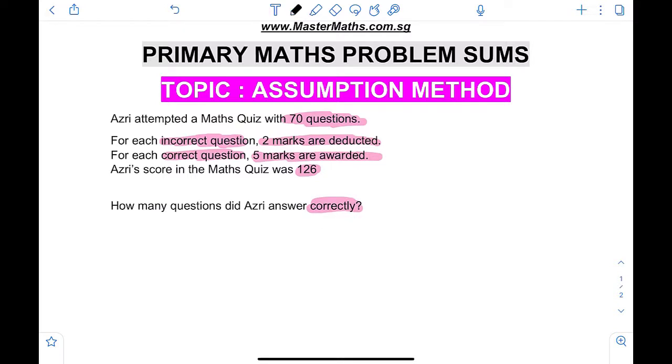Now since we do not know how many incorrect, how many correct questions were there for Azri, we can employ the assumption method. Step number one. We assume all 70 questions are correct.